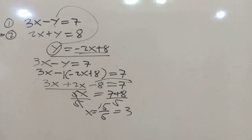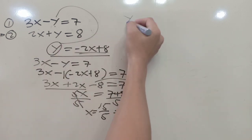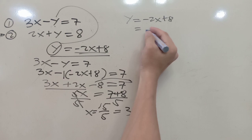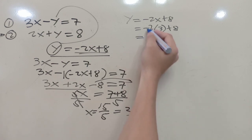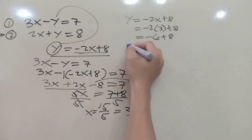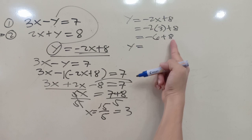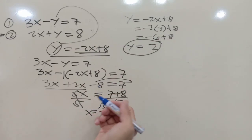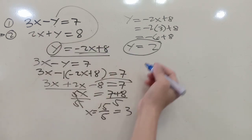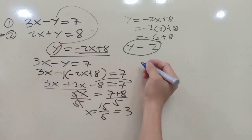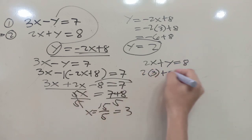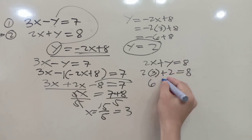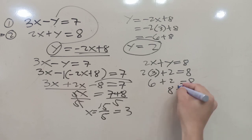Now solving for y using the expression y equals negative 2x plus 8: substituting x equals 3, we get y equals negative 2 times 3 plus 8, which is negative 6 plus 8. Since 8 is larger, 8 minus 6 equals 2, so y equals 2. To verify, using the second equation: 2 times 3 plus 2 equals 8, giving 6 plus 2 equals 8. Our answers are correct.